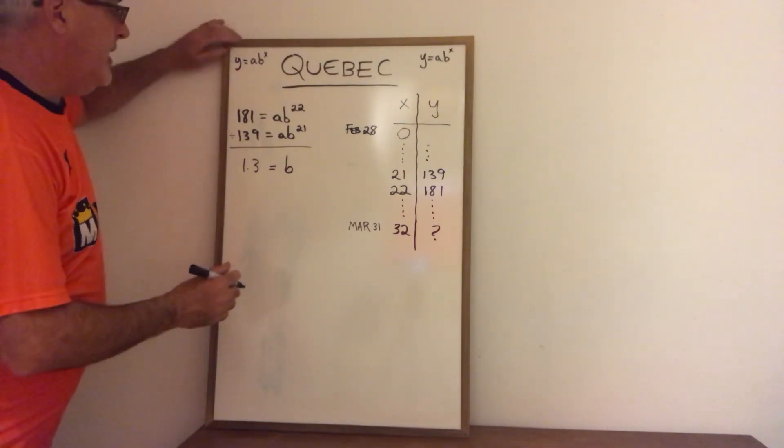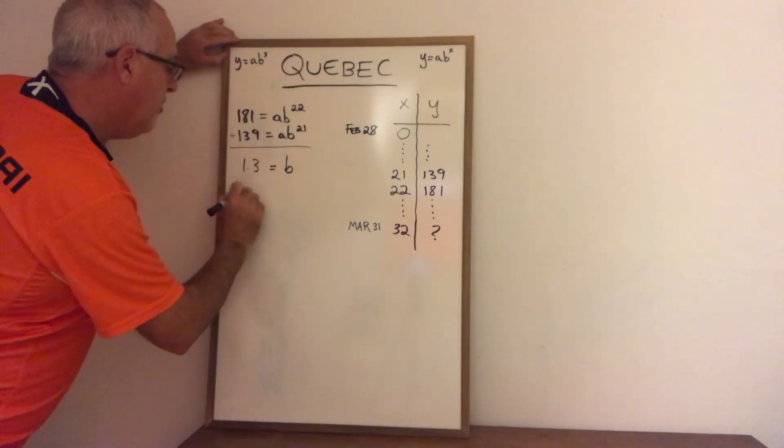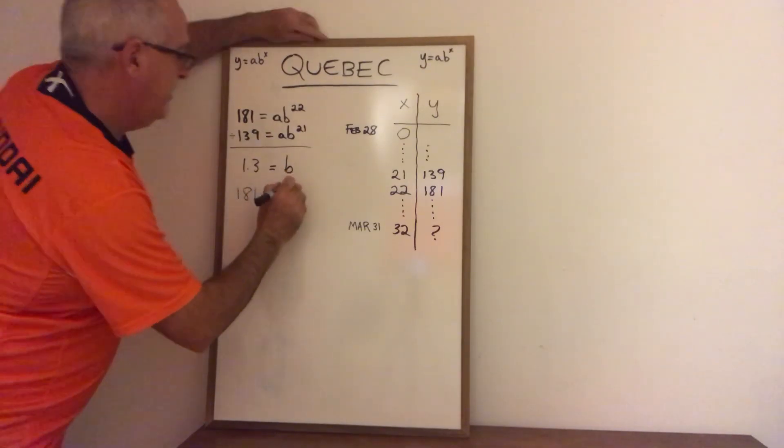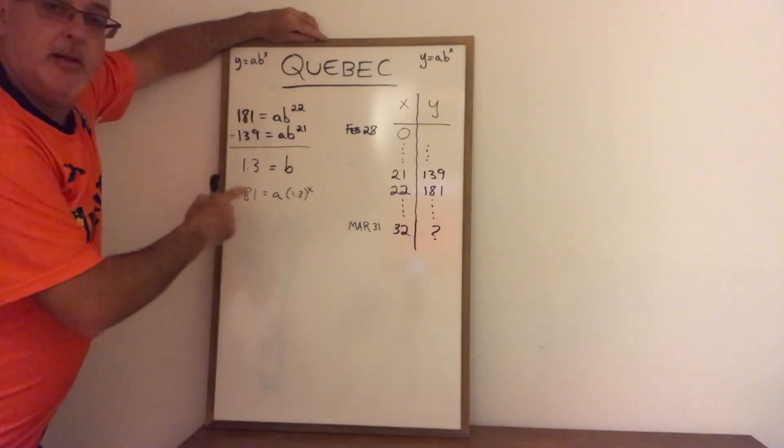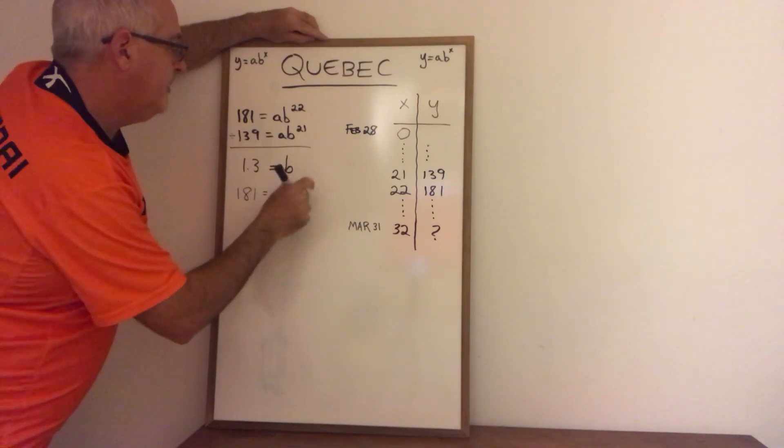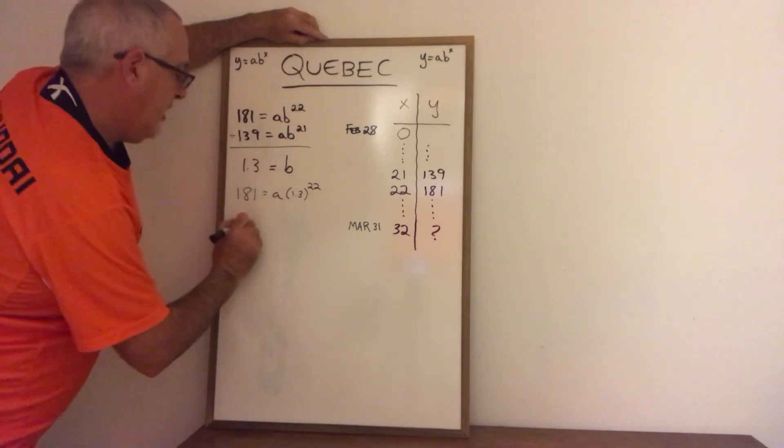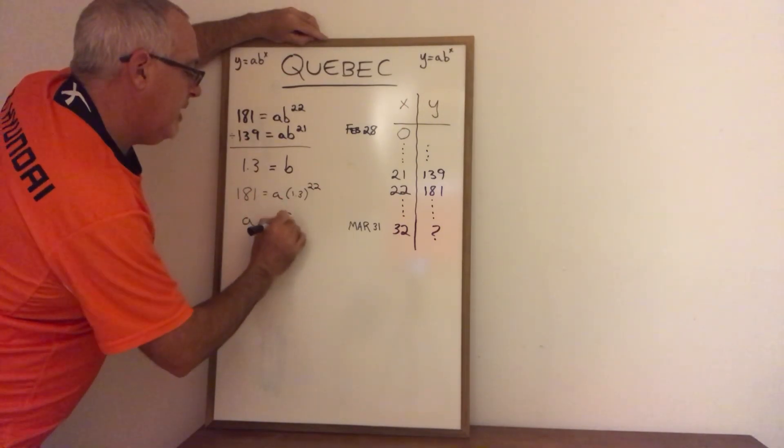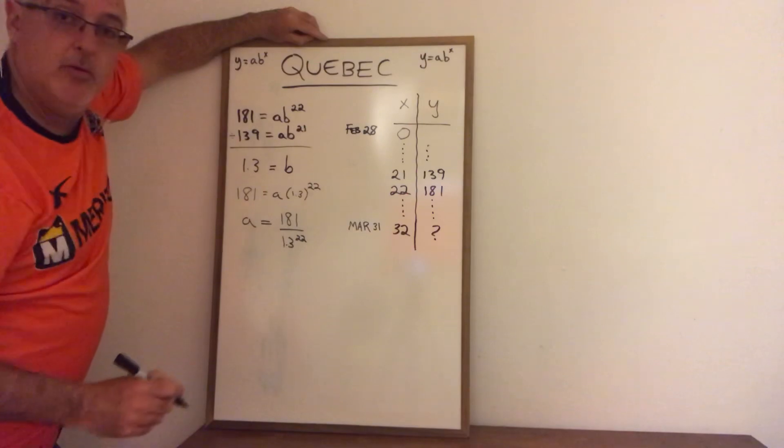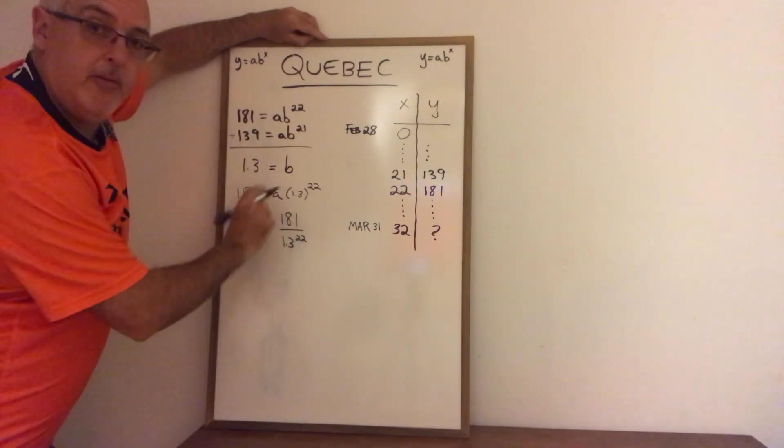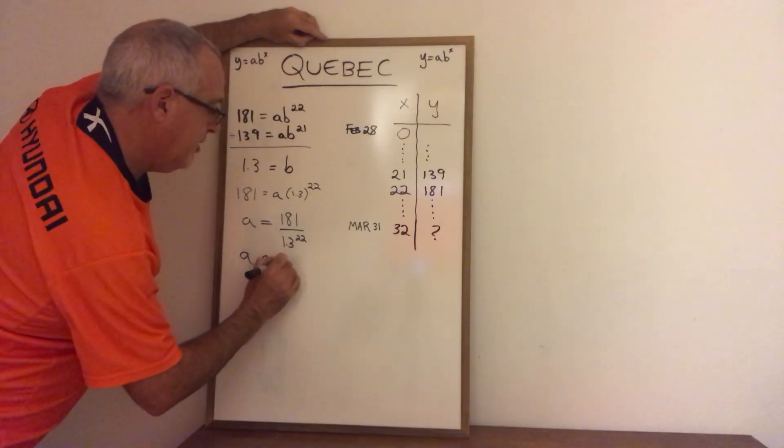Now I can find my a. If I take the first equation and replace the b with 1.3 I get 181 equals a times 1.3 to the 22. Now I can solve for a. When I solve for a I end up dividing 181 by 1.3 to the power of 22. And remember to apply your rule of BEDMAS here the exponent has to be applied before the division. And I get an a value that is approximately 0.56.